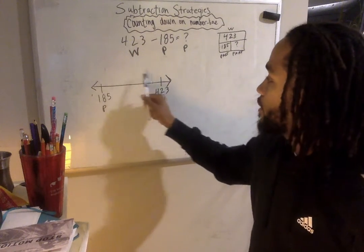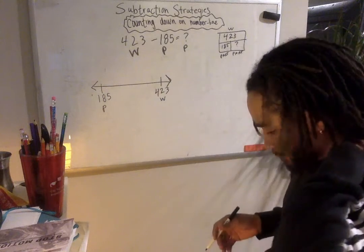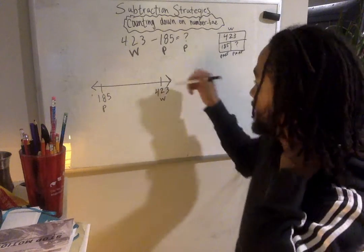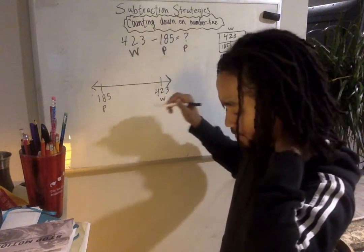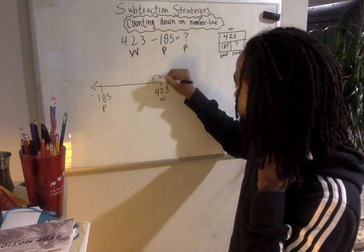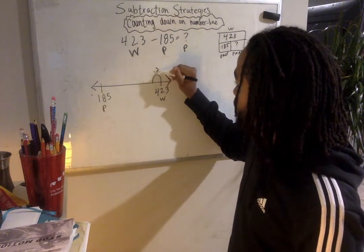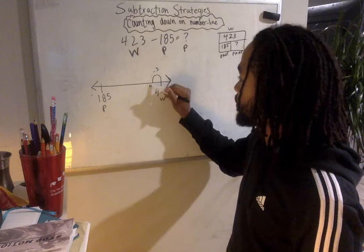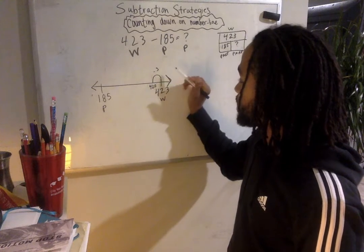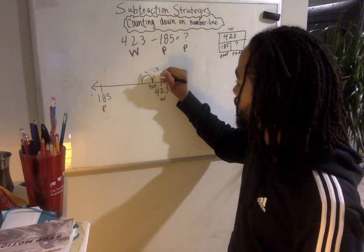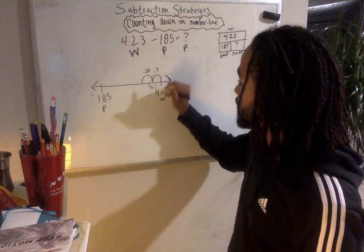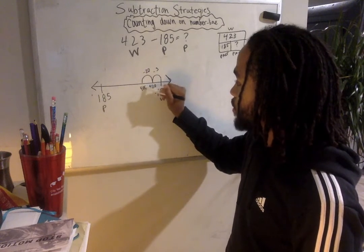How many numbers in between? The difference? One thing I could do is subtract and count down. I could minus 3 to get to a friendly number, 420. I could subtract a 20 to get to 400.